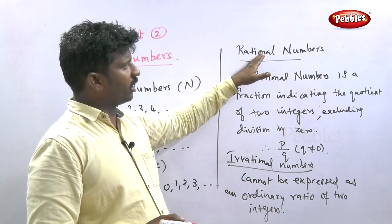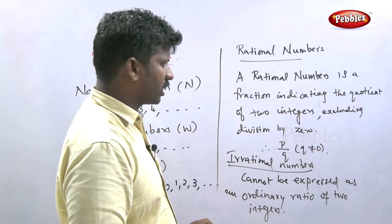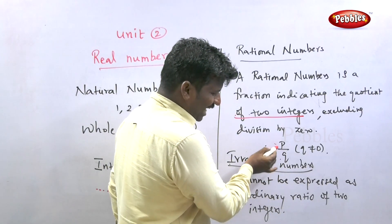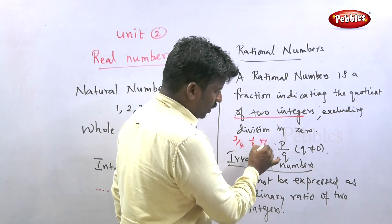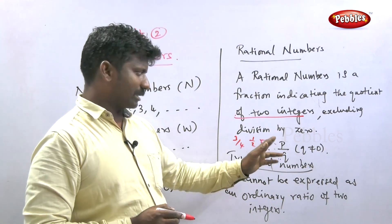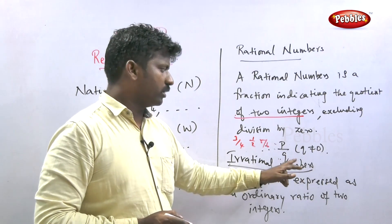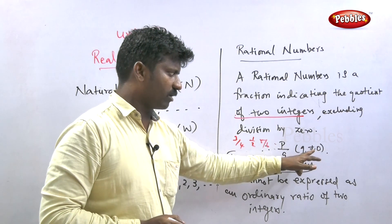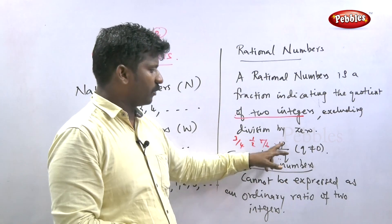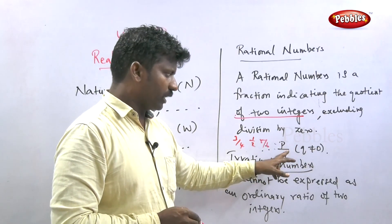Now we study rational numbers. A rational number is a fraction indicating the quotient of two integers, written as P divided by Q — for example, one by two, three by four, five by six. This type of number is called a rational number, excluding division by zero, meaning the denominator Q must not equal zero. Dividing by zero gives infinity.